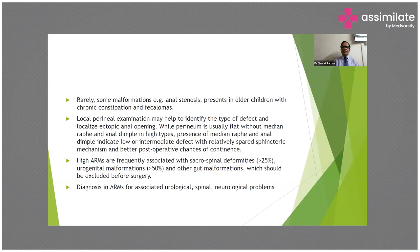Rarely, anal stenosis presents in older children with chronic constipation and fecal overflow. Local perineal examination helps identify the type of defect. While the perineum is usually flat without a median raphe or anal dimple in high-type defects, the presence of a median raphe and anal dimple indicates low or intermediate defect with relatively preserved sphinctory mechanism and better postoperative chance of continence.